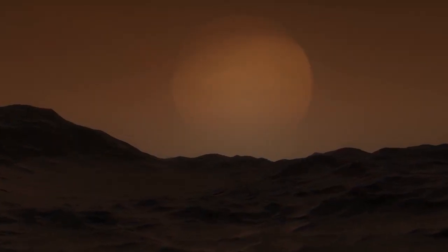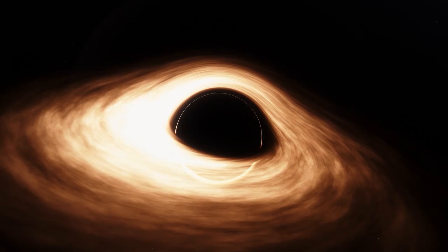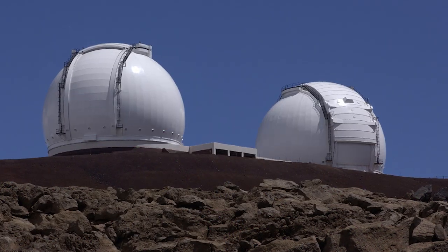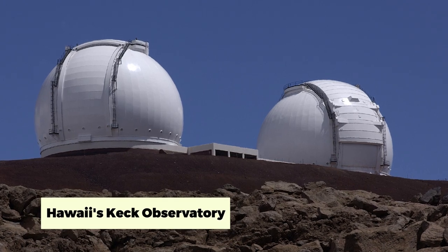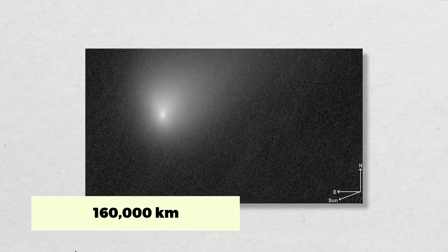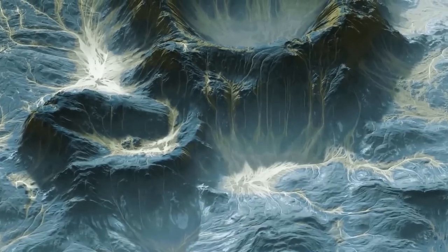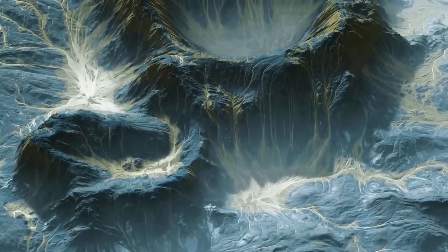You can get an idea of the comet's size by looking at a snapshot obtained by Yale scientists using Hawaii's Keck Observatory. The tail of Borisov is about 160,000 kilometers long, nearly 14 times the diameter of the Earth, whereas the solid nucleus is only a few kilometers broad.